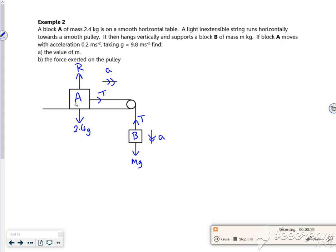In the direction of travel for block A, if we do F=ma in the direction of travel, I've got T in the direction of travel minus nothing, because there's no force holding it back, equals 2.4a.